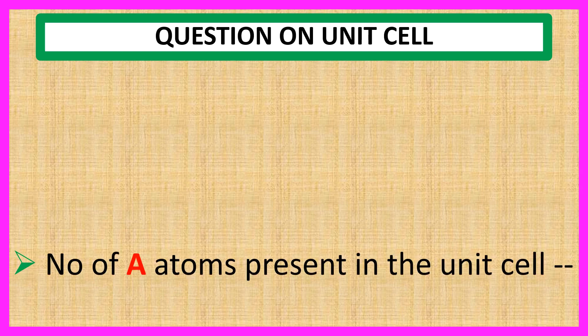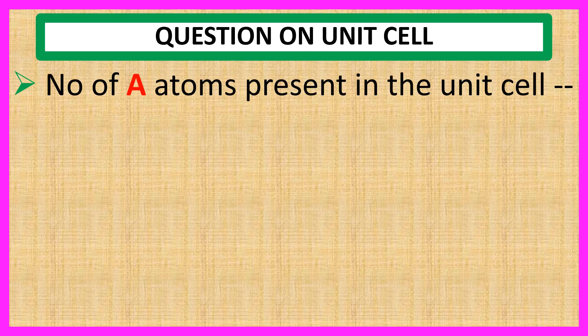First, calculate the number of A atoms present in the unit cell. Here given, A atoms present at each corner of the unit cell. A unit cell has 8 corners. 8 A atoms present at 8 corners are shared by 8 adjacent cubic unit cells, so it contributes only 1/8 part of an atom to the cubic unit cell. So, 8 times 1/8 equals 1. Number of A atoms present in the unit cell is equal to 1.